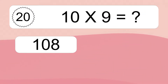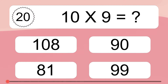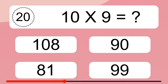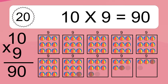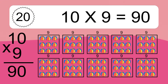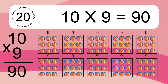Ten times nine equals what? Ten times nine equals 90. We have ten boxes, and each box has nine colorful balls inside. If you count all the balls in all the boxes together, you will have ten times nine balls. This equals 90 balls.